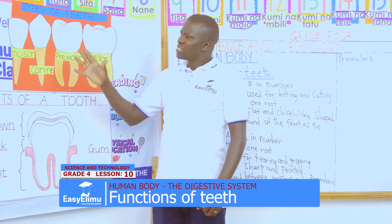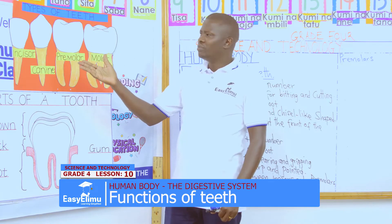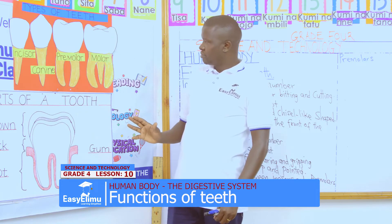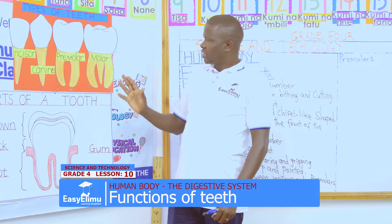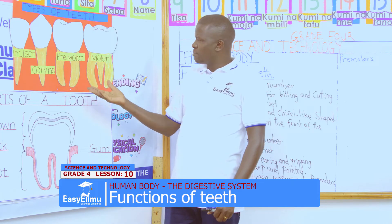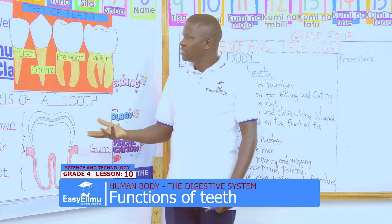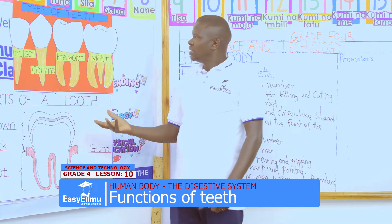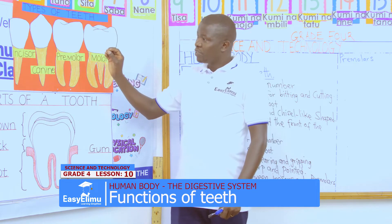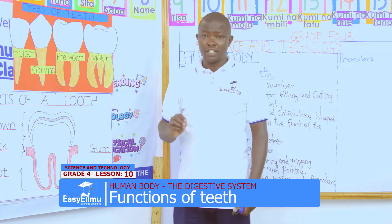When we look at them, they don't look the same in shape. Even the roots are also not the same. Some have two, others three, others one.